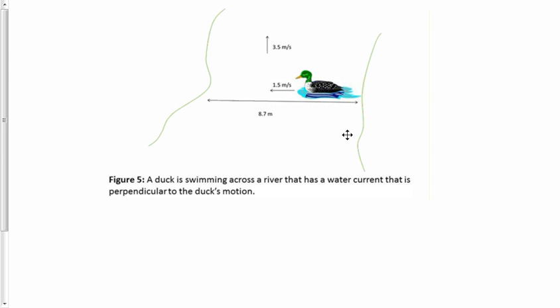This question is a velocity question relative to the perspective of an observer. A duck is trying to go across the river, and the river is 8.7 meters wide, and the duck is moving at 1.5 meters per second.